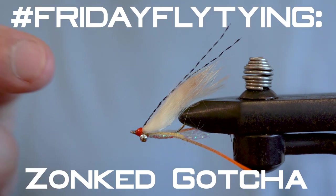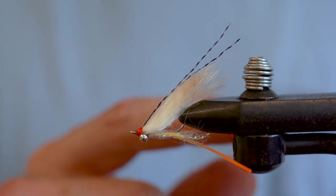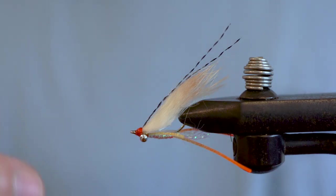Today we're tying a smaller zonkered version of the famous gotcha shrimp, also adding in some rubber legs. The addition of both these materials help get a bit more movement out of the fly when it's sitting still.